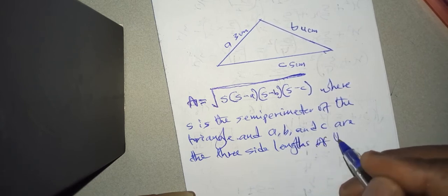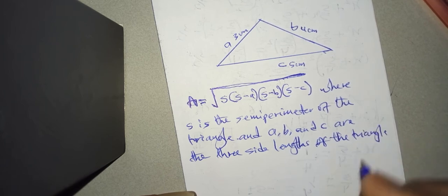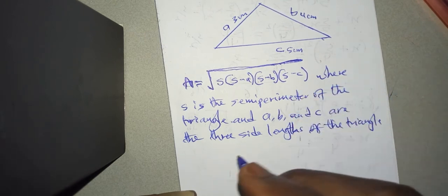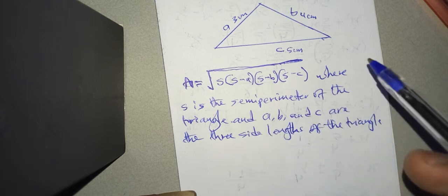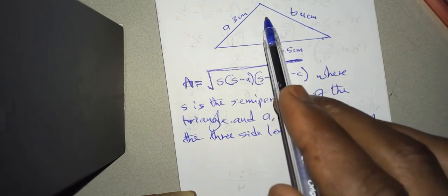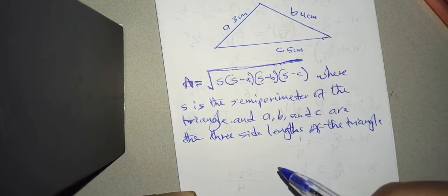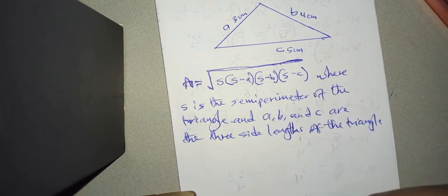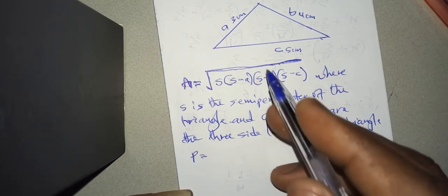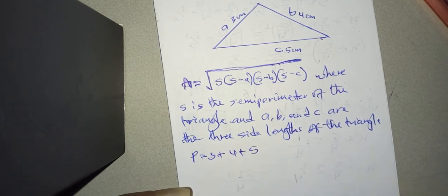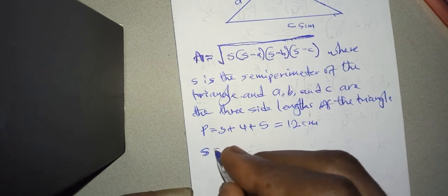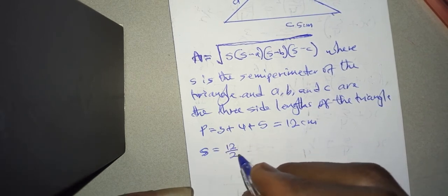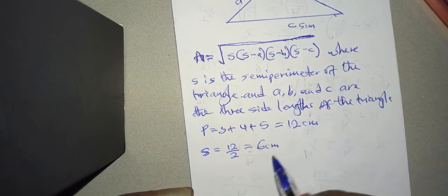Our main task is to find the semi-perimeter of the triangle. When we say perimeter, it is the total distance around a particular figure. Semi means half of it, so we calculate the perimeter of this triangle and then find half of it to get the semi-perimeter. The perimeter is 3 plus 4 plus 5, which is 12 centimeters. So s, the semi-perimeter, is 12 over 2, which is 6 centimeters.